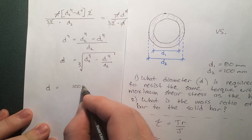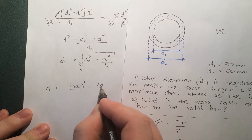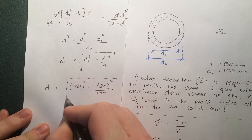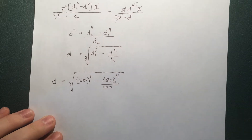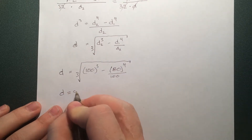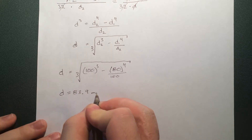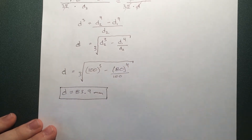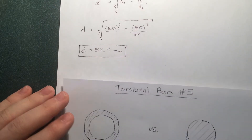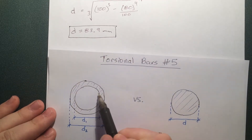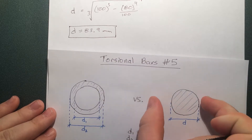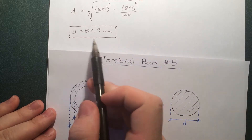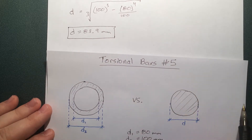Now we can plug in our values. They're given in millimeters — since all variables are in millimeters, the answer will come out in millimeters too. D1 is 80, D2 is 100. Plugging those in gives us a solid bar diameter of approximately 83 mm. You should expect your answer to be somewhere between the inner and outer diameters — 83 is a reasonable value in that range.